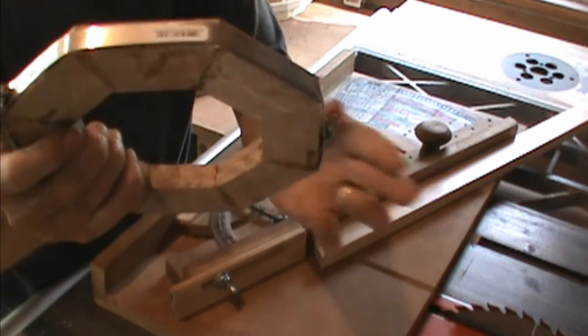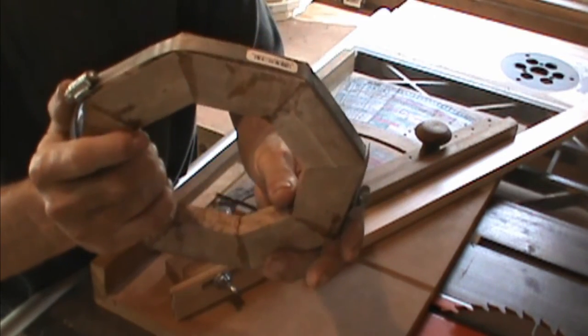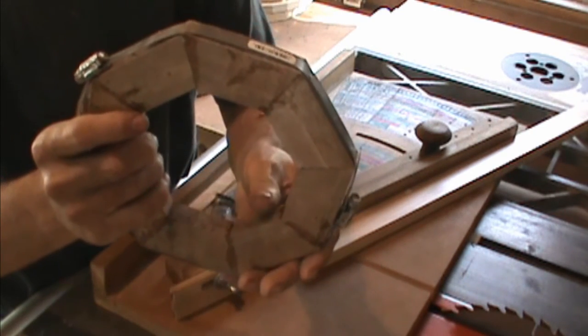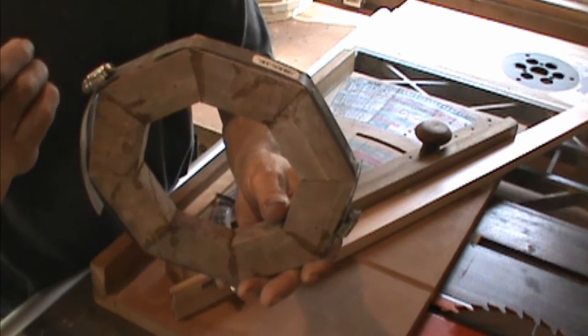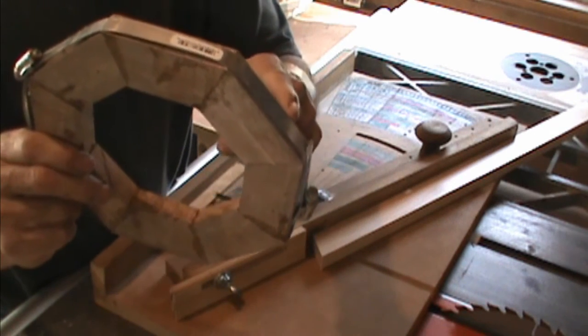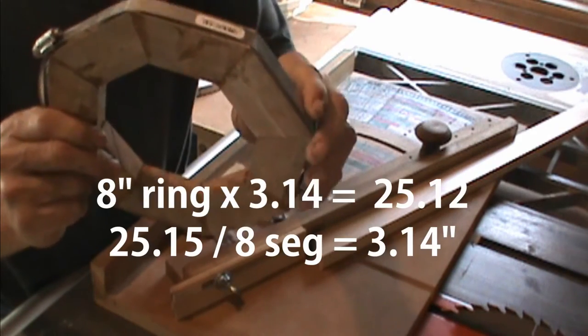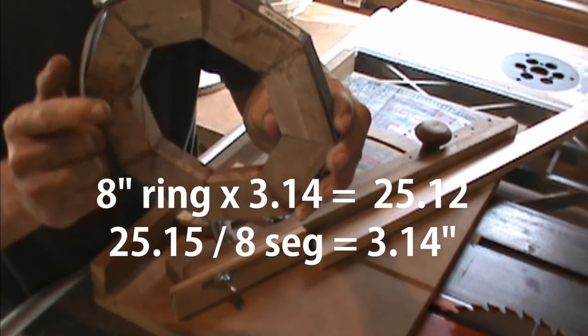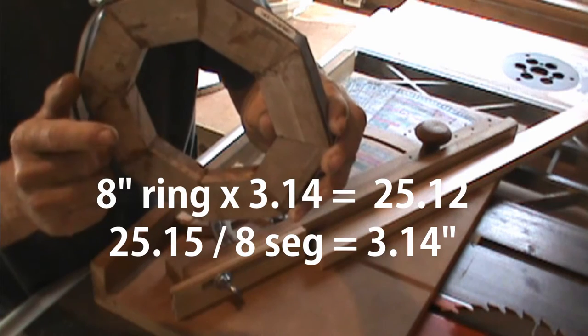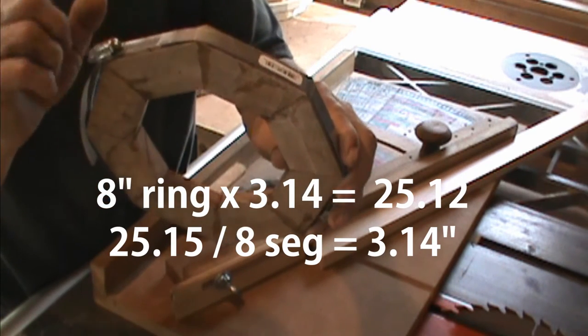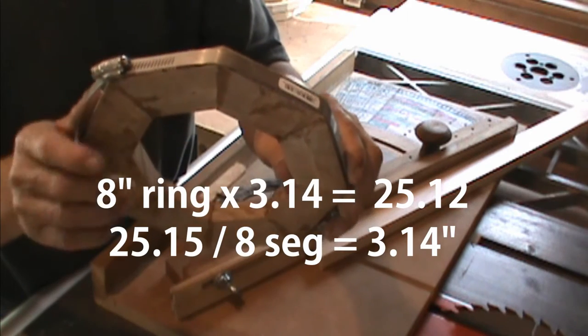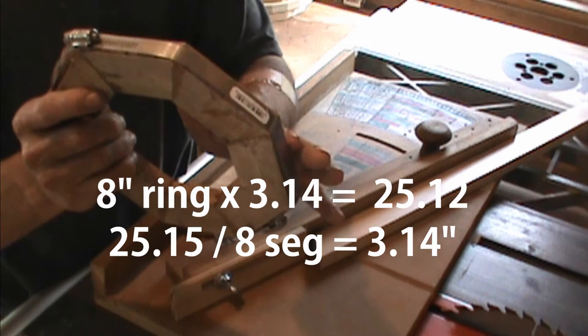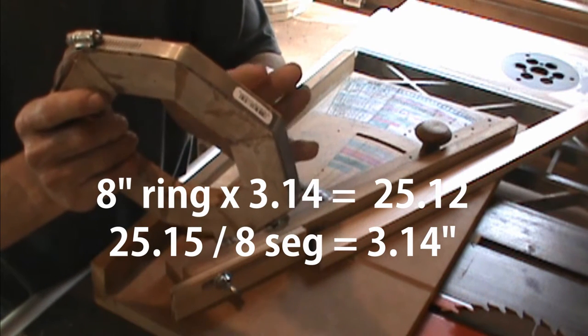So if I did the formula for this size ring, let's say it's an eight-inch, I'll use that formula because I remember that one. And if I do the eight-inch ring, eight-inch diameter times the 3.14, it tells me that each segment, and then divide it by the eight rings. So you have the diameter, you multiply that times pi, you get an answer for that.